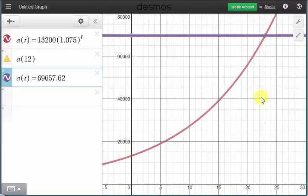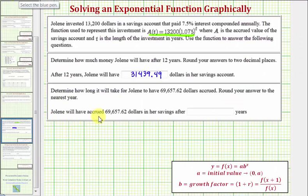The nice thing about Desmos is it automatically calculates the key point on the graph. Notice how if I move the mouse over this point of intersection, we can see the coordinates of that point where the t-coordinate is 23 and the y-coordinate is the desired account balance of 69,657 dollars and 62 cents. But notice how Desmos is rounding the function value to the nearest integer. This tells us that it's going to take 23 years to reach the desired account balance. So Jolene will have accrued 69,657 dollars and 62 cents in her savings after 23 years. I hope you found this helpful.